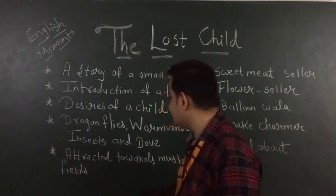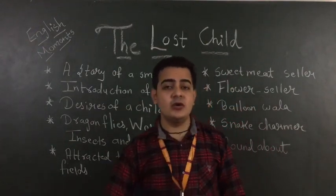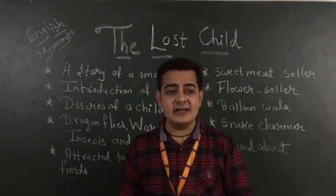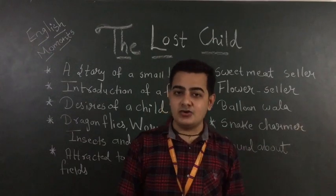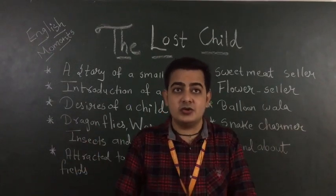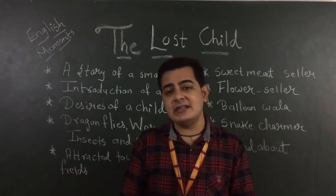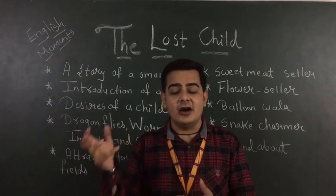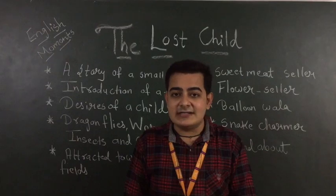Next, he was attracted by the worms and insects. When he moved further, he saw worms and insects coming out from the ground. Why? Because winter was almost over and they were coming out to get the sunshine, to feel the warmth. Numerous worms and insects were coming out from the bottom of the land, and he got attracted towards them.